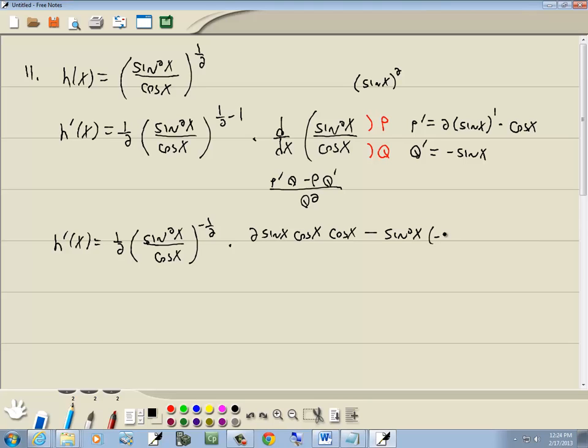times q prime, which was negative sine x, over q squared, so over cosine squared. Now let me double check that. Okay.